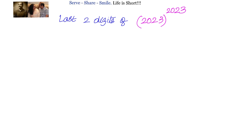Hello friends, welcome back. In the last video we have seen how to find out the last two digits of a number ending with 1. Now in this video we will see how to find out the last two digits of powers of a number if the number is ending with 3, 7, or 9. We already have a process in place if the number is ending with 1, which we have seen in the last video.